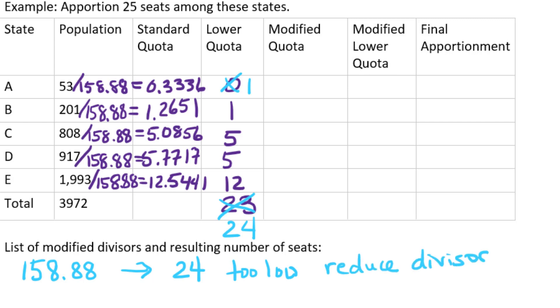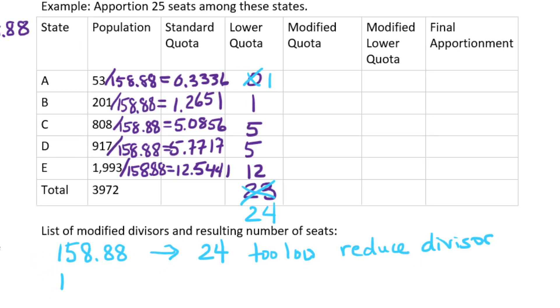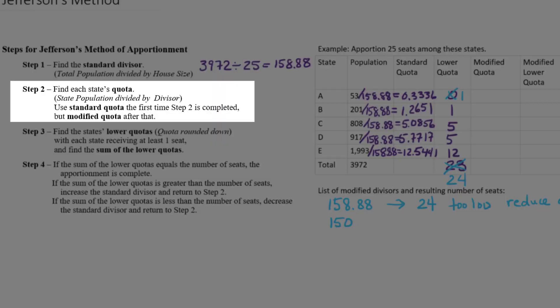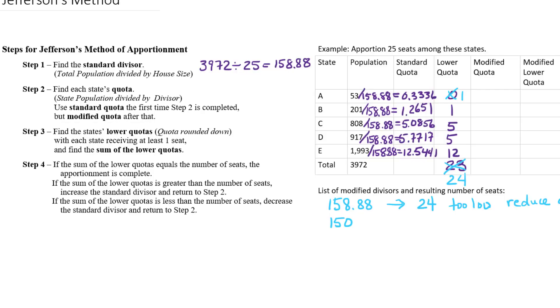So for example, I might choose something like 150 instead of 158.88. We're going back to step two now. We're going to divide each of the state populations by this new divisor, and we're going to see how our apportionment works out.